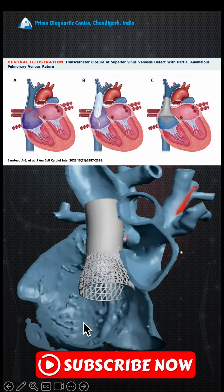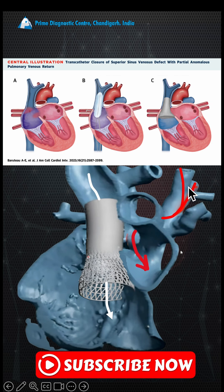With the device closure technique, we place the device in the superior vena cava and put a small guide into the pulmonary vein which opens there. By doing this, we redirect the blood into the right atrium from the SVC, while the pulmonary vein, which is posterior, drains into the left atrium.